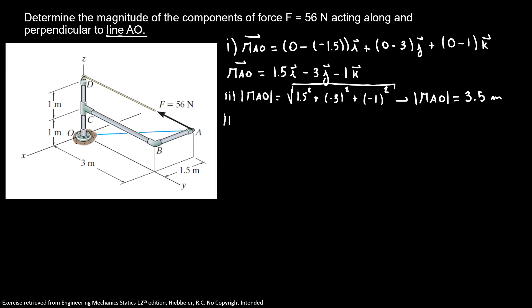To find my unit vector, the unit vector UAO is equal 1.5 over 3.5 I minus 3 over 3.5 J minus 1 over 3.5 K. From this point, we can choose two different options. If you want to use decimals, our unit vector UAO is equal 0.429 I minus 0.857 J minus 0.286 K.